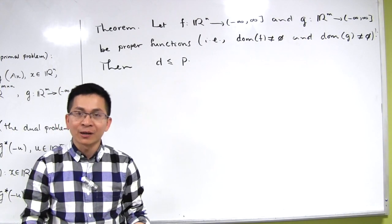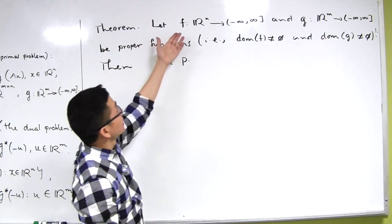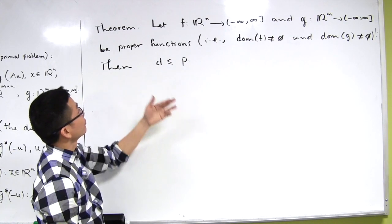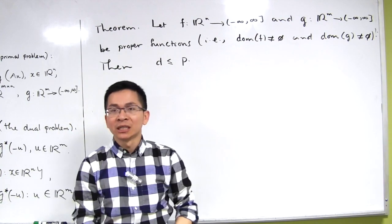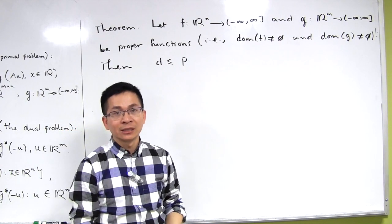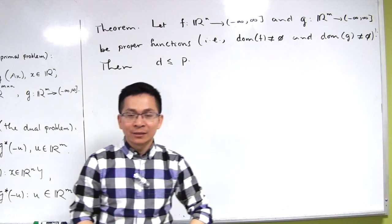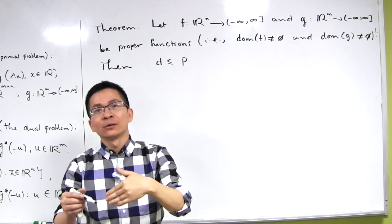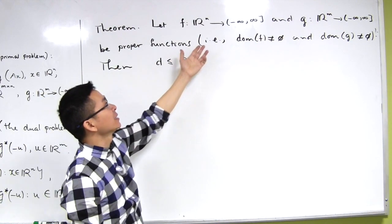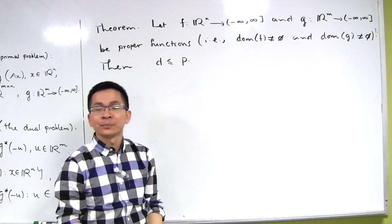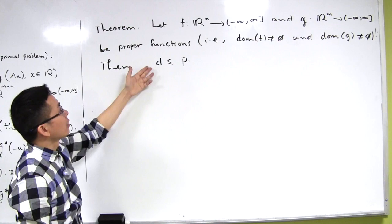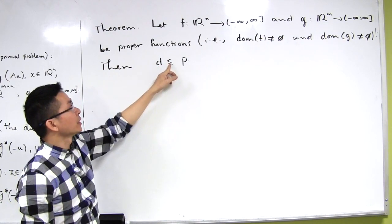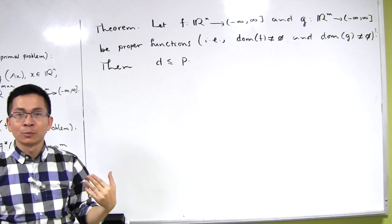Next we study the relationship between p and d through the so-called weak duality and strong duality. Now we talk about weak duality. We consider two functions f and g defined on R^n and R^m as before, and we make the additional assumption that f and g are proper functions, meaning they have non-empty domain. We make this assumption to avoid adding infinity with minus infinity. Under these conditions, we always have d is less than or equal to p — that is, the optimal value of the dual problem is always less than or equal to the optimal value of the primal problem.